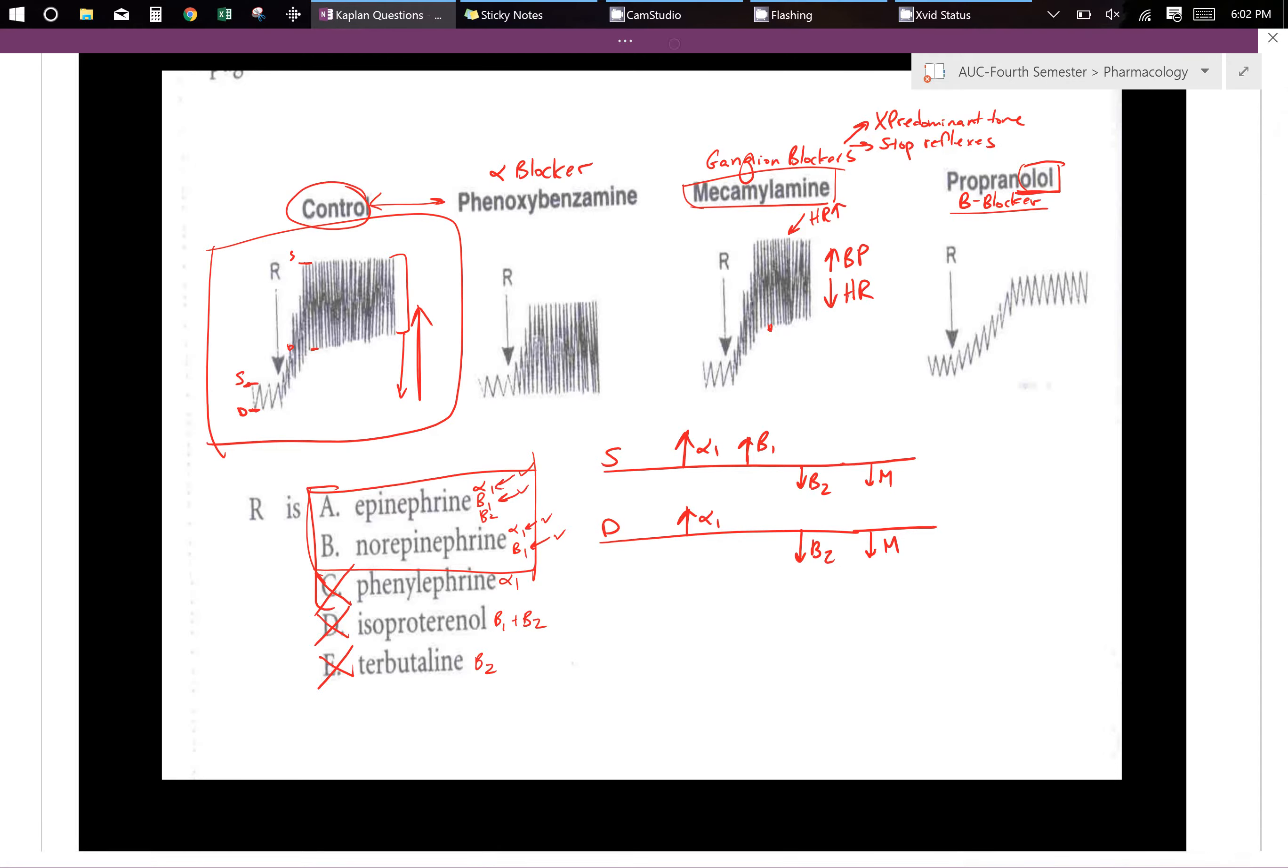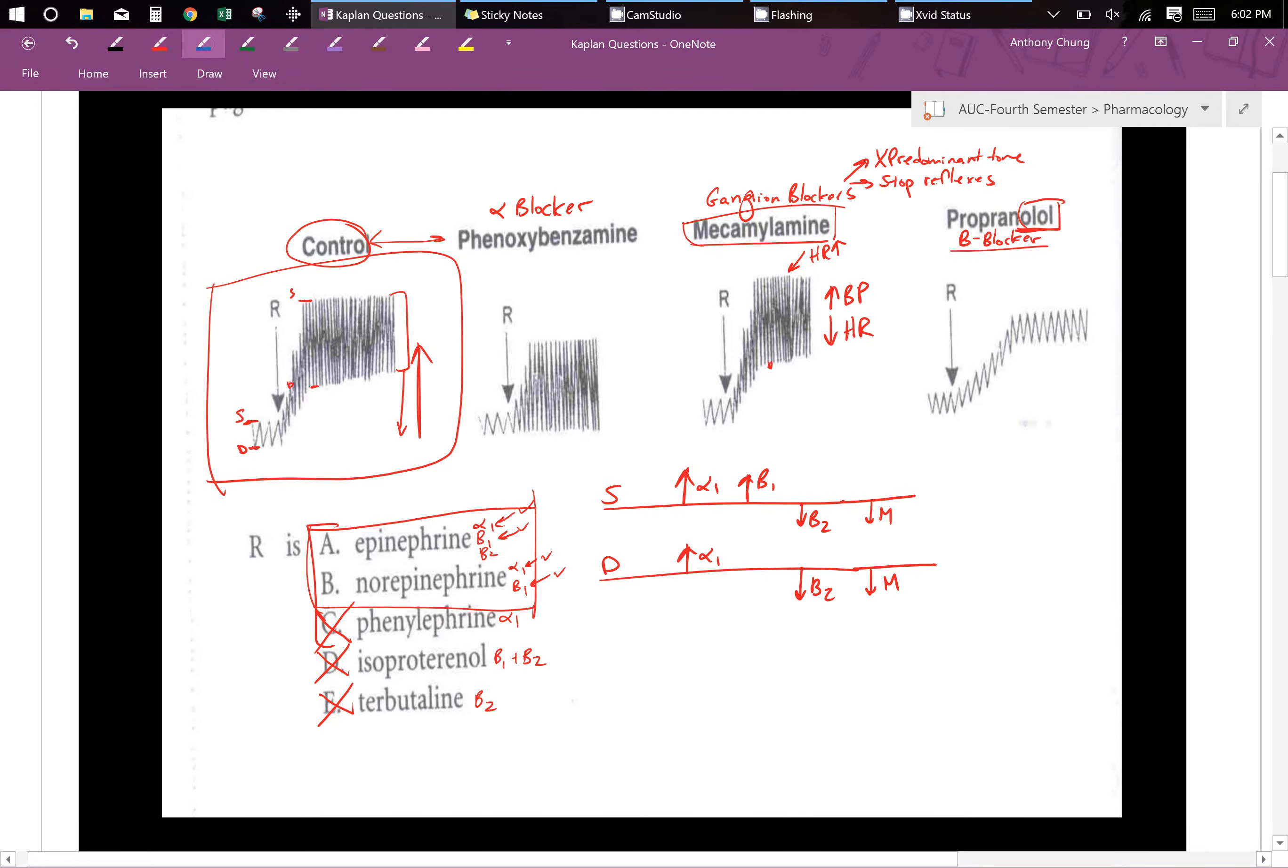If you get rid of beta 1, beta 2 like that, it's not specific, then you only have alpha 1. Look, if you only have alpha 1, then only your systolic and diastolic will go up an equal amount.